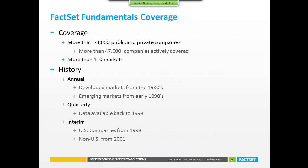Our coverage has more than 73,000 public and private companies, with more than 47,000 actively covered right now, equating to roughly more than 110 markets throughout the globe. Annual history goes back to the 1980s for developed markets, with emerging markets going back to 1990, and quarterly coverage back to 1998 — all inherited from the WorldScope database.